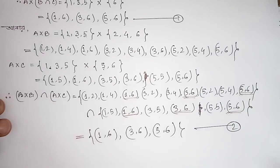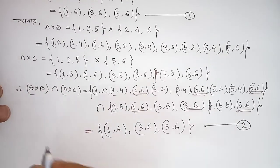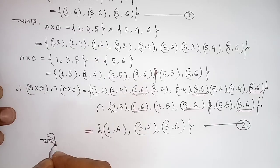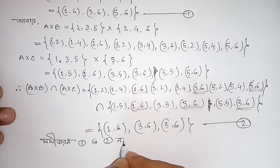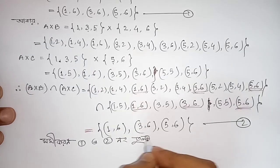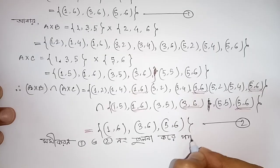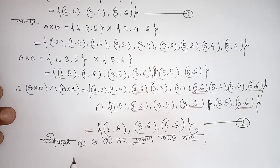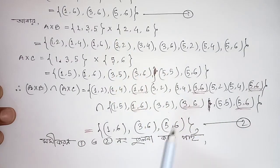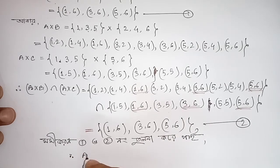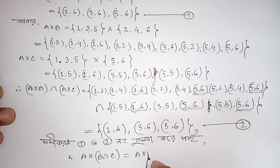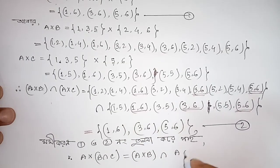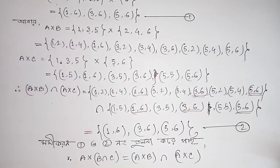This is 2. So we cannot make the two sides equal. We cannot find: does B intersection C equal A cross B intersection A cross C? That is what we were told.